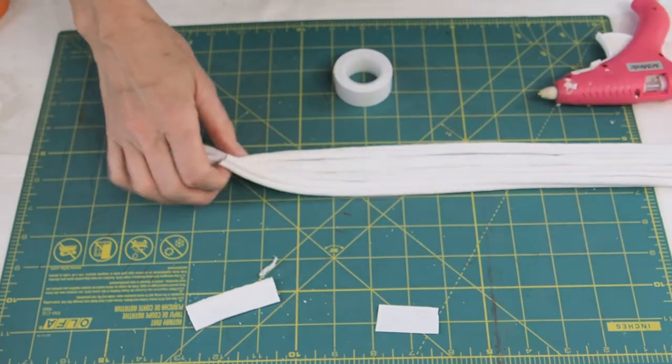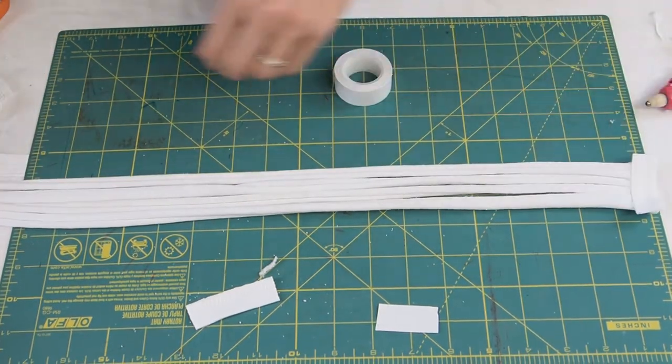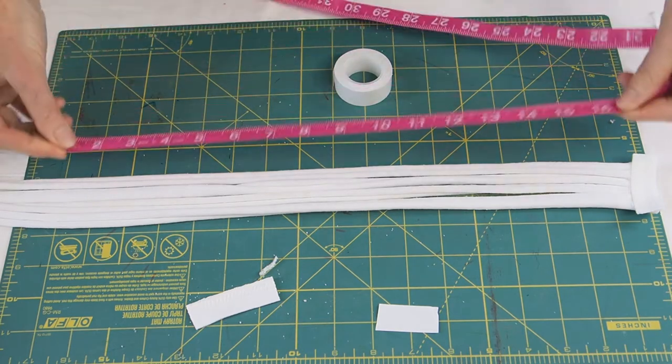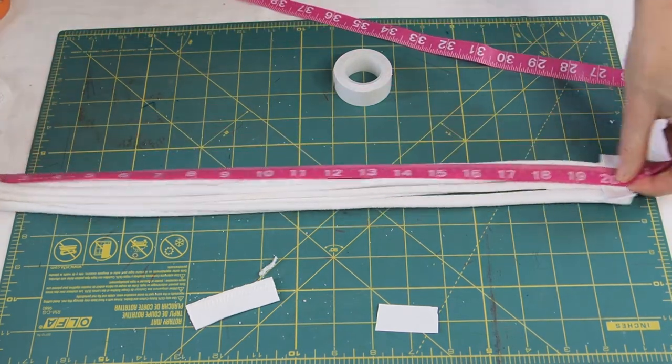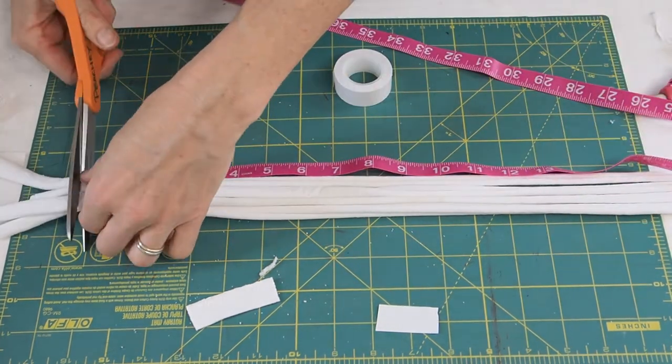We want to measure out about how long we want for a headband. Generally I use 20 inches for a headband. If you're making for a child you might make a little smaller but measure your head to make sure just what you want and how snug you want that headband to be. I generally use 20 inches.